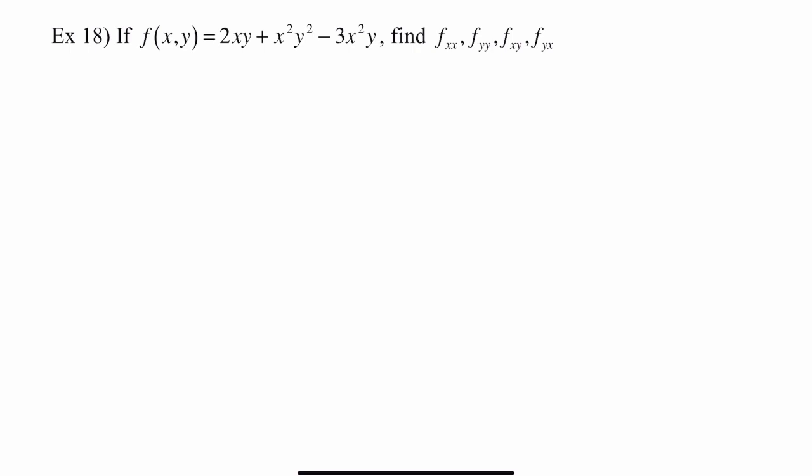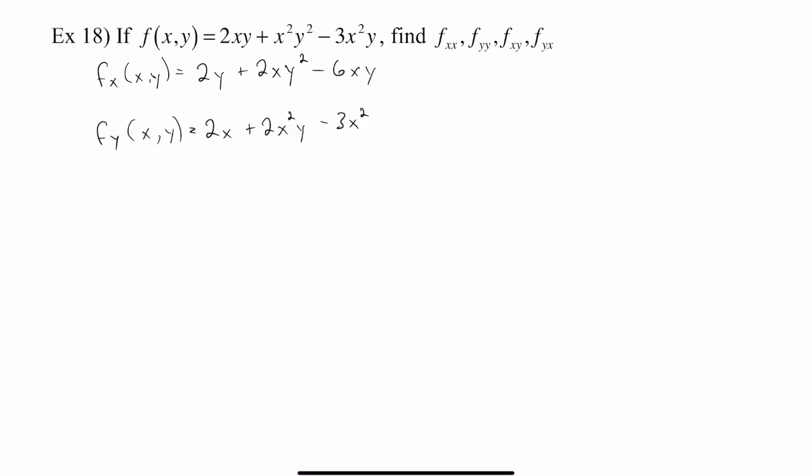We can show that in example 18. We have a function of two variables, x and y, and we want to find fxx, fyy, fxy, and fyx. The very first thing you want to do is figure out what fx and fy are. To find fx, you're just taking the derivative of f with respect to x and treating the y's as constants. Similarly, fy would just be the derivative of f with respect to y, treating x as a constant.